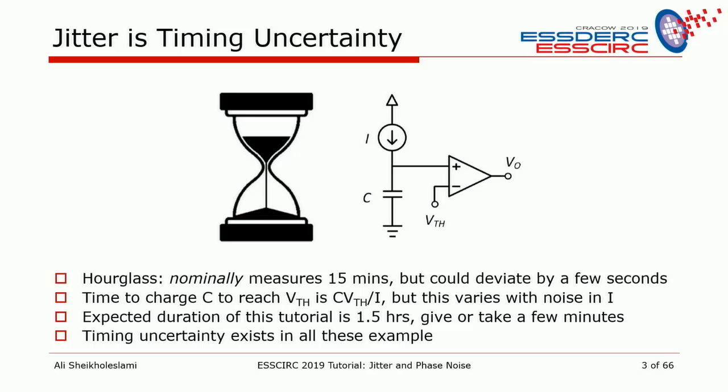Timing uncertainty obviously exists everywhere. For example, this tutorial is supposed to be 90 minutes, but I cannot guarantee it will finish exactly on time. If I want to go at the same pace, it's very hard to predict the exact 90 minutes. That's another example of timing uncertainty.